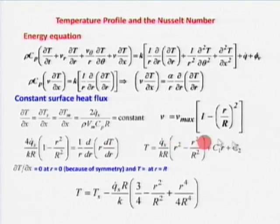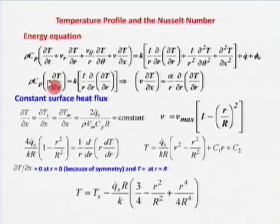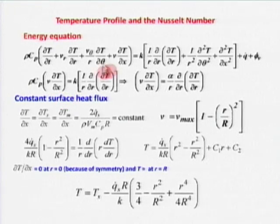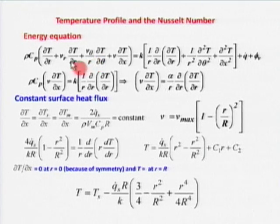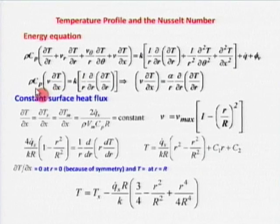We have the velocity profile already. For steady flow, ∂T/∂t is cancelled. Fully developed means V_R = 0 and V_theta = 0, so those terms drop out. On the left-hand side I am left with ρC_P × V × (∂T/∂x) in the streamwise direction.